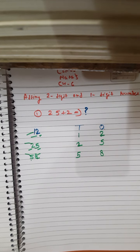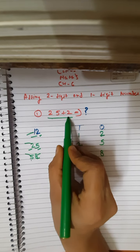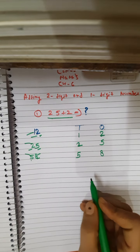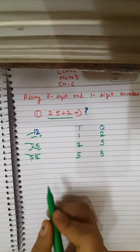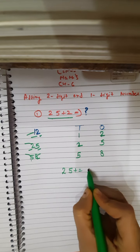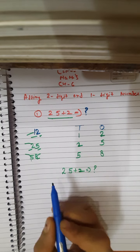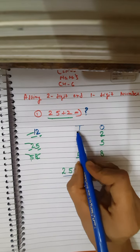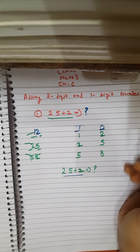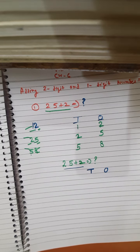So why are we discussing 10s and 1s place values? In addition, we need to place the numbers according to their place value. So in this example of 25 plus 2, we first need to arrange these numbers as per their place values. We write the 10s and 1s columns.